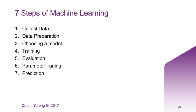Now we've discussed the big definitions surrounding machine learning, let's discuss some of the steps. This was discussed by Yu Feng in 2017, who described seven steps to machine learning: collecting your data, data preparation, choosing a model, training, evaluation, parameter tuning, and prediction. In order to understand these steps, I've come up with a case study that allows us to create our own model, and I'm going to talk through how each step applies to it.